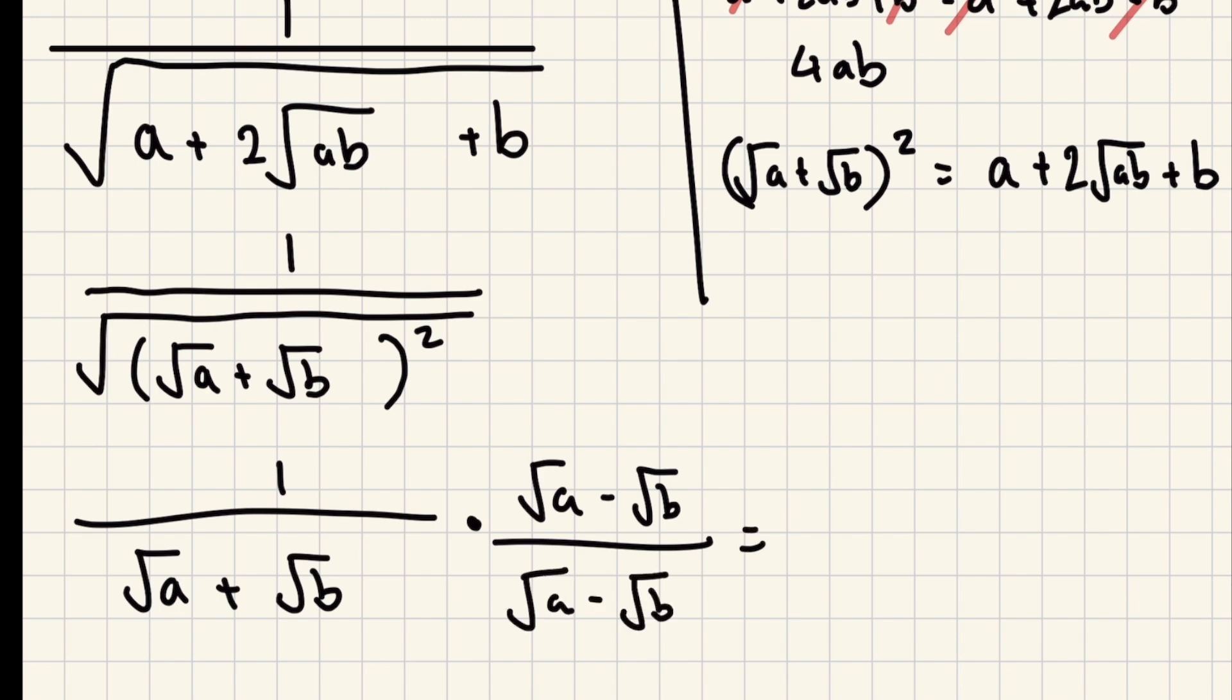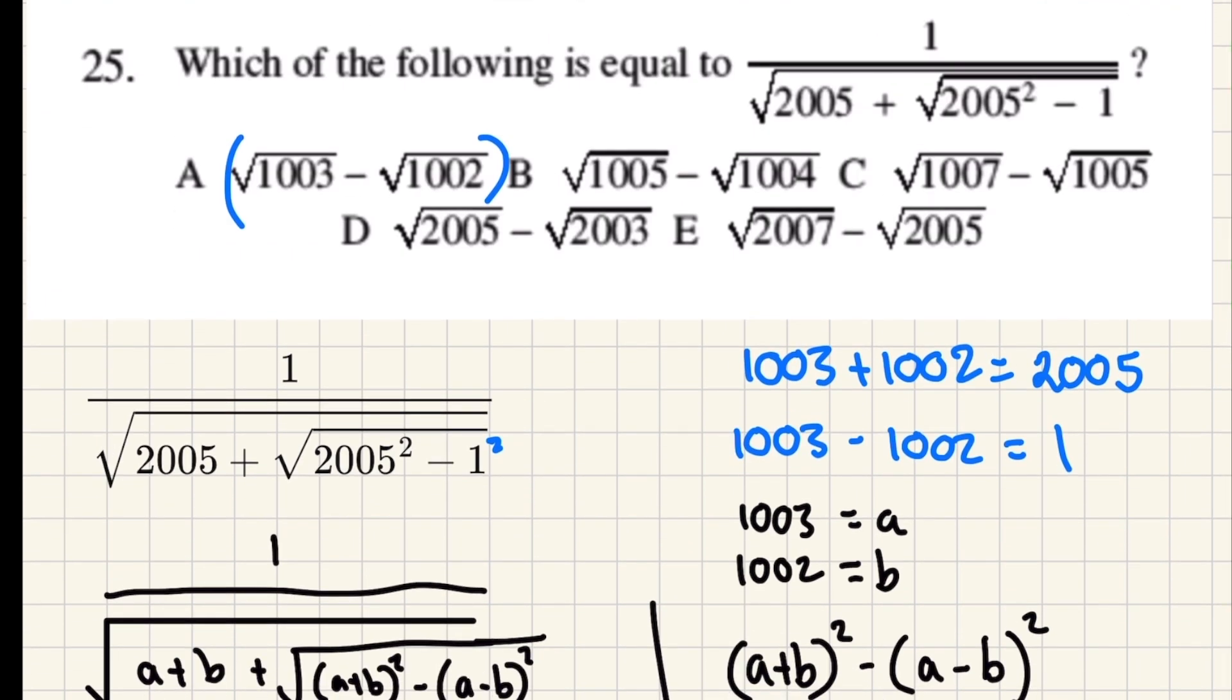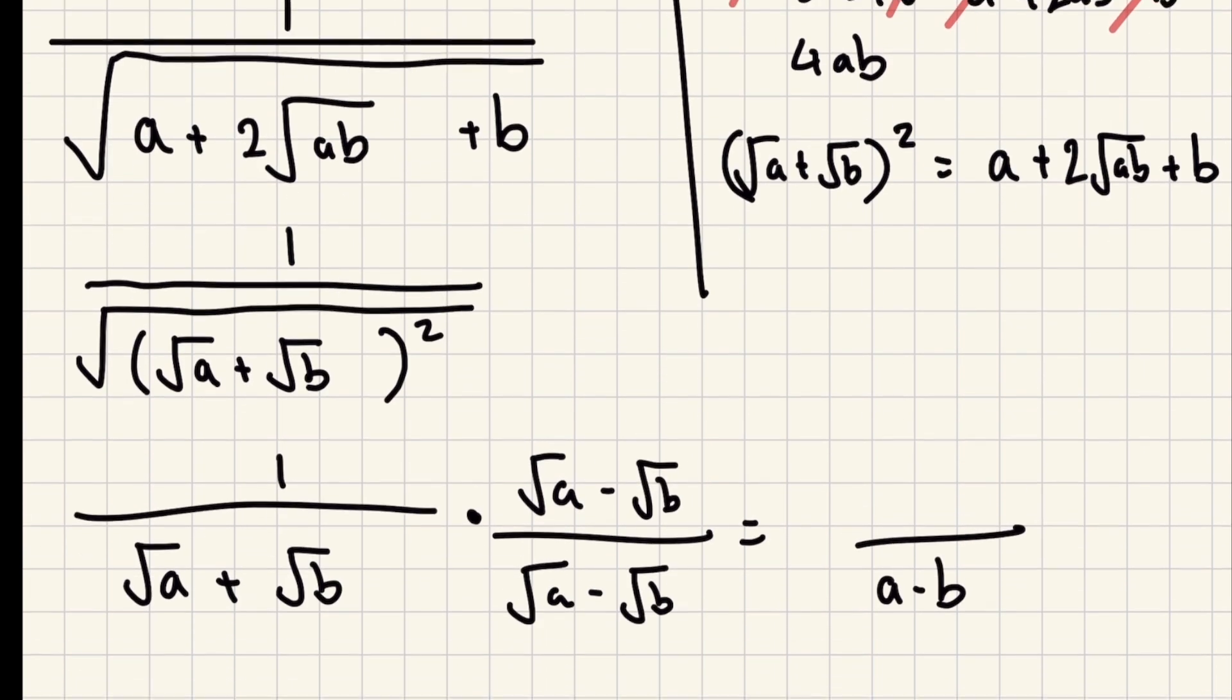Now when we rationalize this denominator, you get something really cool. On the bottom, can you see, we're just going to end up with a minus b. What are a and b?